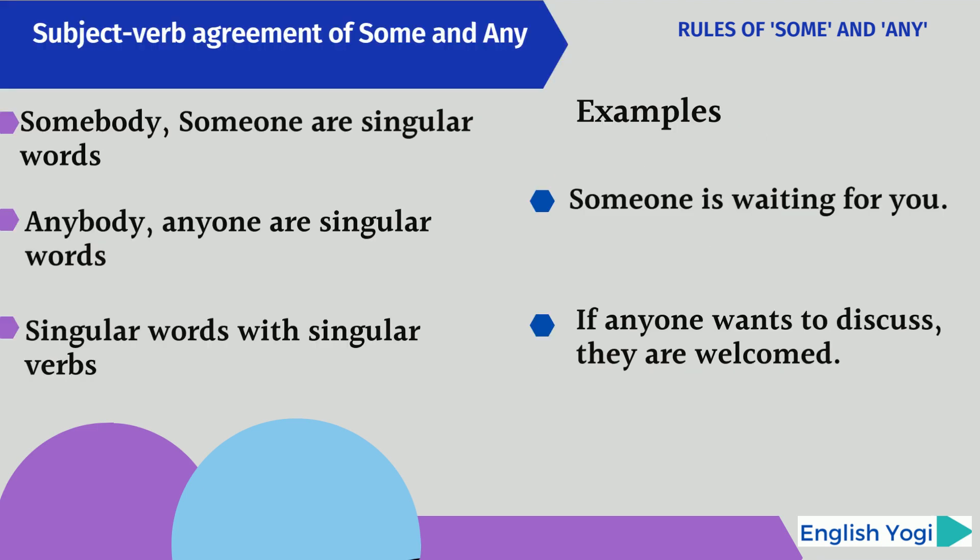The next rule about 'some' and 'any' is related to subject-verb agreement. 'Somebody' and 'someone' are singular words; 'anybody' and 'anyone' are also singular words. So we know that singular words take singular verbs. For example: 'Someone is waiting for you.' — 'someone' is a singular word, so we use a singular verb. Second example: 'Anyone wants to discuss.' — 'anyone' is a singular word, so we use the singular verb form.